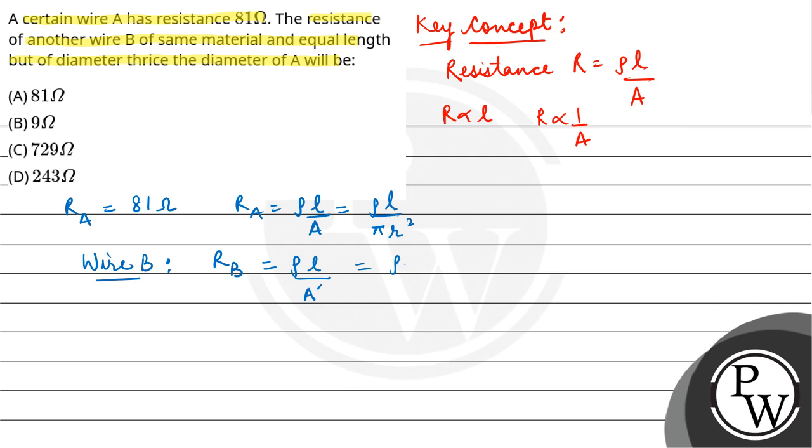In this case, rho L upon pi R dash square. Comparing R A and R B, since the radius is three times larger, R B equals R A divided by 9.